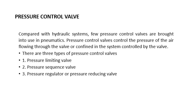Compared with the hydraulic system, few control valves are brought to use in pneumatic systems as well. Pressure control valves control the pressure of the air flowing through the valve or confine the system controlled by the valve. There are three types of pressure control valves: pressure limiting valve, pressure sequence valve, and pressure regulator or pressure reducing valve. The working principle is the same as the hydraulic system — only the working medium changes. Pneumatic systems use compressed air or other gases.